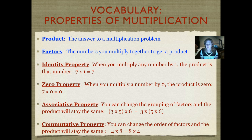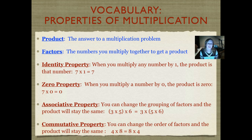In the commutative property, you can change the order of the factors, and the product will stay the same. In that example, it says four times eight equals eight times four. It doesn't matter what order you write them — you're going to get the same product. It would be the same if you multiplied three digits together and wanted to change the order of those three digits to make it easier to multiply. I remember commutative property because it has the word commute in it. Your parents may commute to work — that means they move from one place to another. In the same way, we would move our numbers.